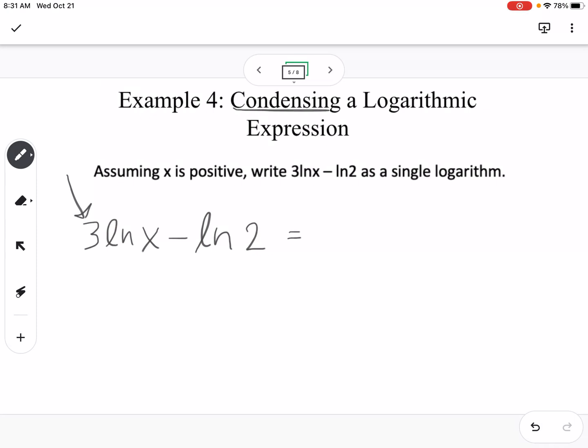The first thing I notice is that I have a 3 out front, which can turn into an exponent. So this would be natural log of x to the third power minus natural log of 2. And then we have subtraction, which means it's going to condense into division. So this would be natural log of x to the third divided by 2.